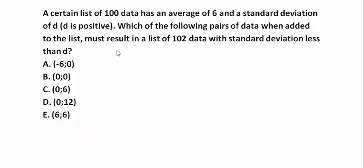A certain list of 100 data has an average of 6 and a standard deviation of d. D is positive. So we have a list of 100 data. The average of this list is 6, so average equals 6. And the standard deviation is equal to d.